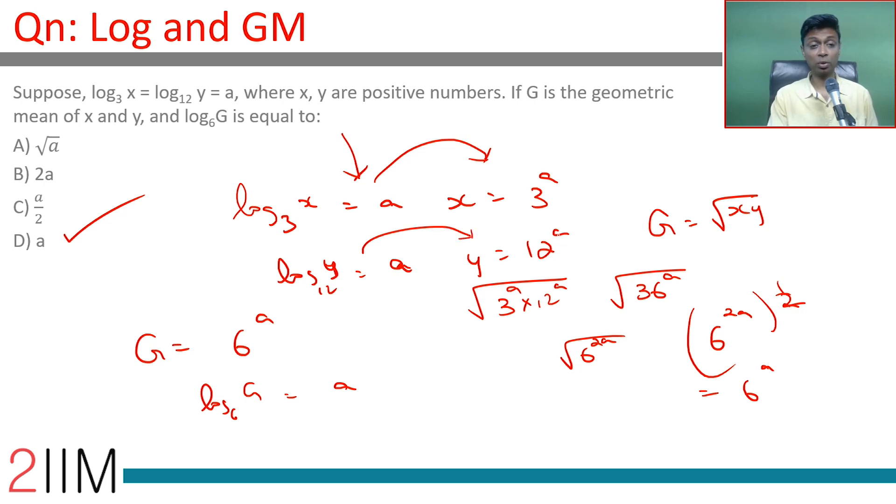X is 3 power a, y is 12 power a. X into y is 36 power a, which is 6 square whole power a. Or square root of that is just 6 power a, then you're through.